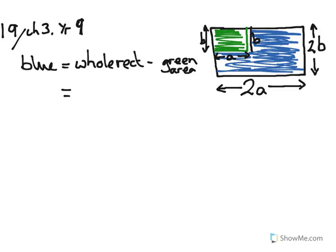So the first thing we do is write out our expression for what is the whole area. Well it would be 2a times 2b, length times breadth, minus the area of the green area, a times b. 2 times 2 is 4, a times b is ab, minus ab. A times b is just ab.